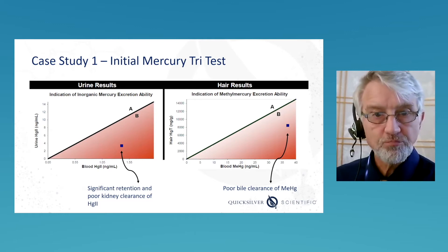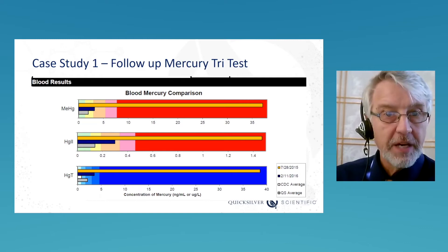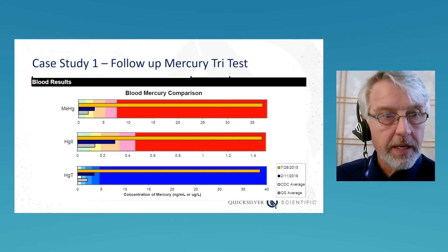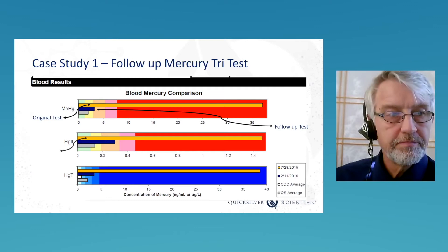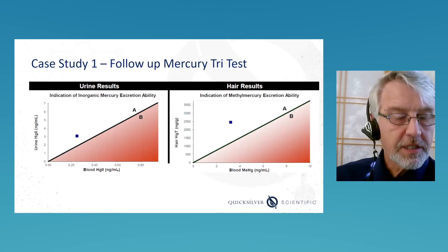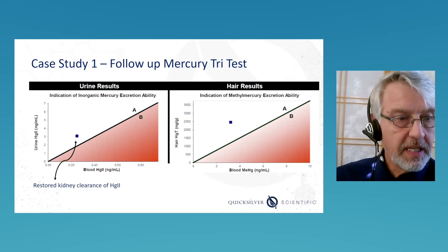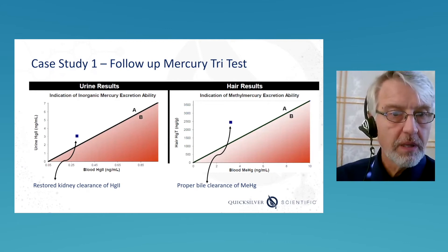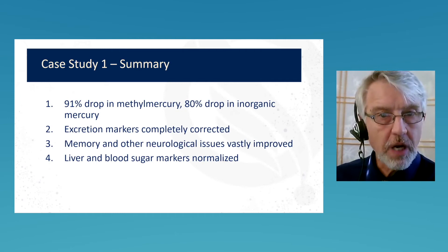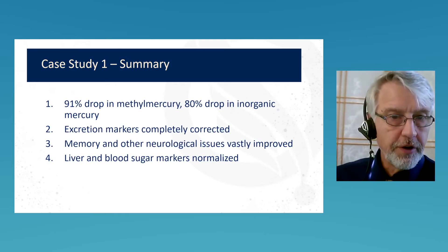On the follow-up test, the gold bar is the prior result and the dark blue bar is the current result. It came down from severe toxicity down to moderate. The summary: 91% drop in methylmercury, 80% drop in inorganic mercury, excretion markers corrected, neural symptoms improved, and liver and blood sugar markers normalized.